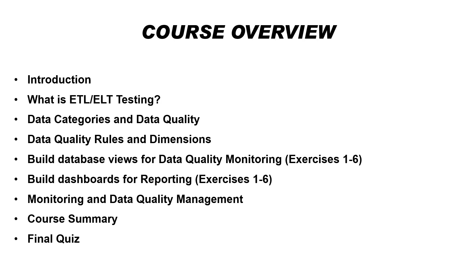Next we're going to look at data categories and also data quality. Before we look at data quality, we're first going to look at the different categories of data: transactional data, master data, reference data, metadata, and so on. Then we'll look at data quality rules and the data quality dimensions. Data quality dimensions are different dimensions used to measure data quality within a data quality framework, and data quality rules help us in measuring data quality. Based on our data quality dimensions, we'll create rules that measure our level of data quality for each of those dimensions.